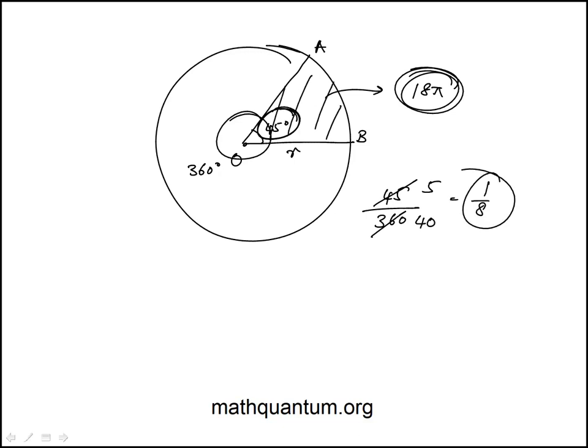So the area of the sector is 1/8th the area of the circle, which means that the area of the circle would be 8 times 18 pi.